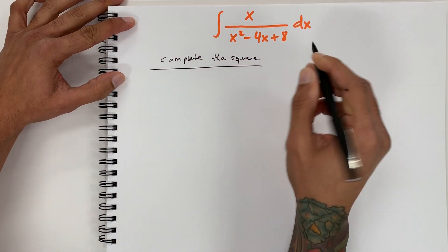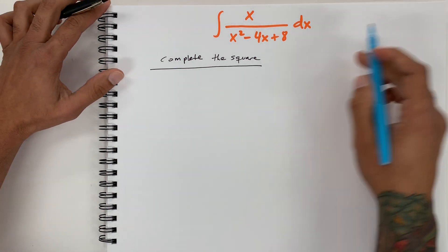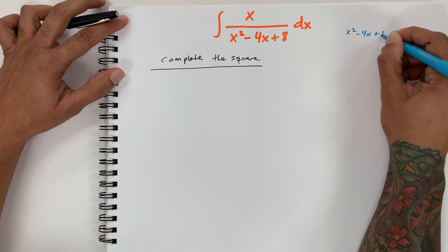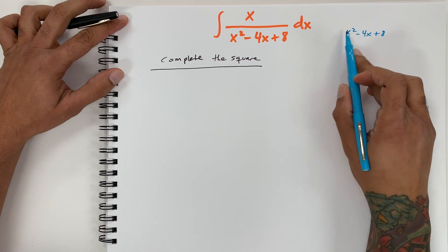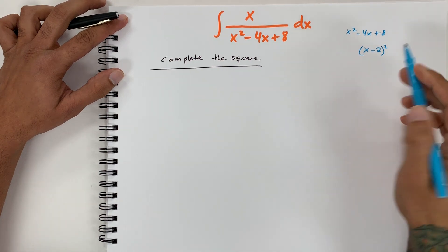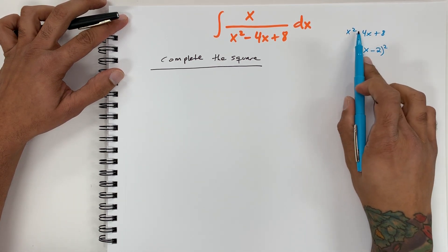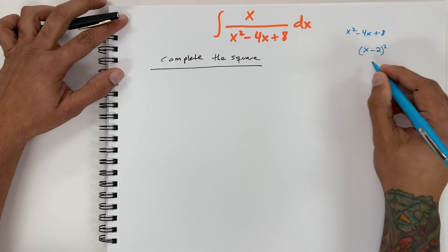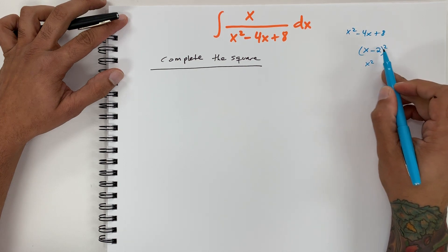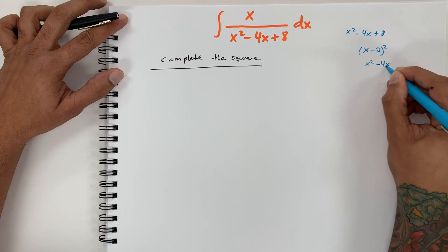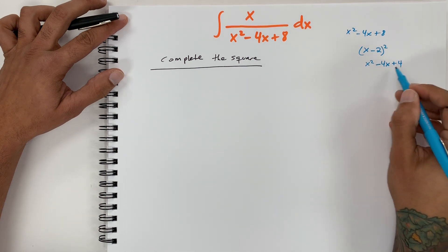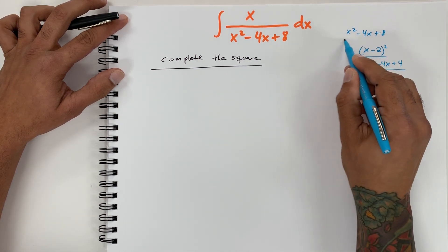Let's try to complete the square for the bottom. I'm going to do it over here on the side. So, x squared minus 4x plus 8 — if we complete the square for this part, we're going to have x minus 2 squared. That expands to x squared, then x minus 2 times another x minus 2, giving us negative 4x, and negative 2 times negative 2 is positive 4.